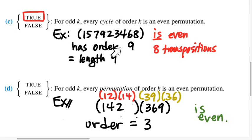And so all of my cycles that make up this permutation will be cycles that can be written as an even number of transpositions, and therefore the total number of transpositions is a sum of even numbers.